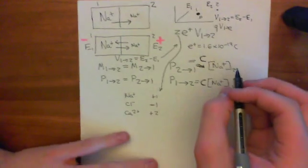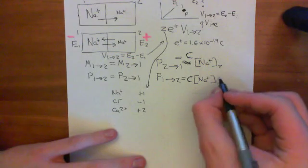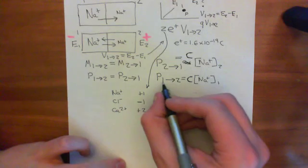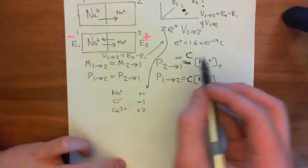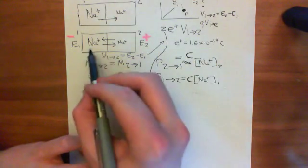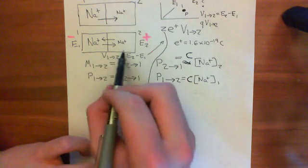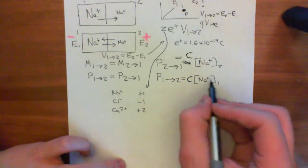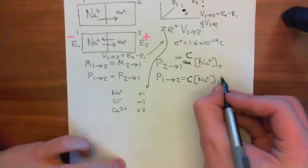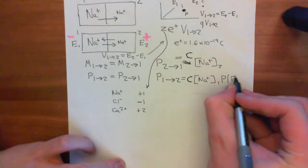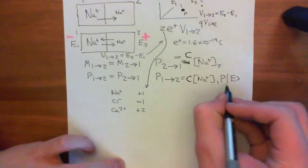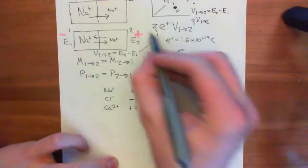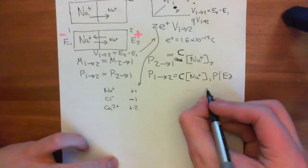We want to know what is the probability that a sodium ion is going to move from compartment 1 to compartment 2, or more generally, any ion with any charge Z is going to move from compartment 1 to compartment 2. That's going to be a function of its concentration, but you also need to multiply by the probability that the energy of the particle is greater than or equal to the amount of energy required to move from compartment 1 to compartment 2.